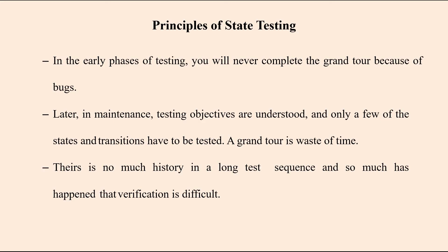There is not much historical context in a long test sequence, making verification difficult. Verifying from the starting test to the ending test is completely difficult because we must pass through multiple states. It is very difficult to pass through each and every path, link, or node in the flow graph or state graph. Verification of each node and link in a long testing sequence is sometimes impossible.